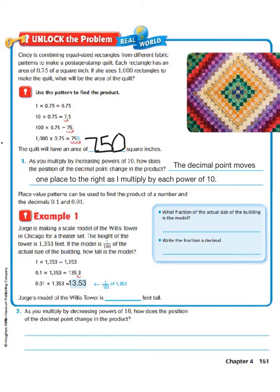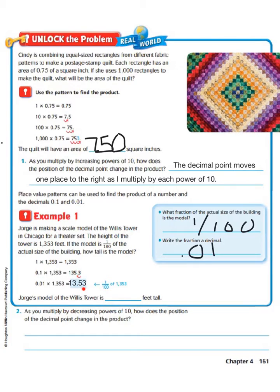A quick, easy way to remember that is to think of our decimal points in terms of fractions. What fraction of the actual size of the building is the model? We did one hundredth, so the fraction of the actual size of the building is going to be one hundredth of the actual size. The next thing it asks us to do is write the fraction as a decimal — this is one hundredth, written as 0.01. So Jorge's model of the Willis Tower is going to be thirteen and fifty-three hundredths feet tall.